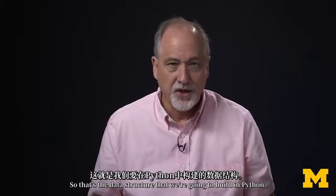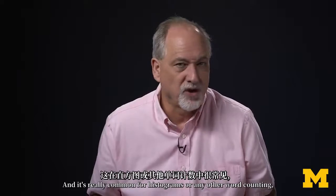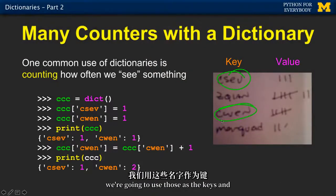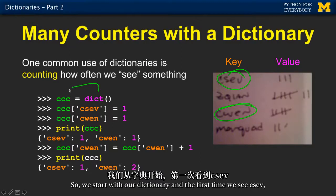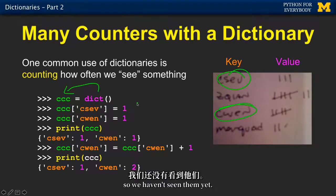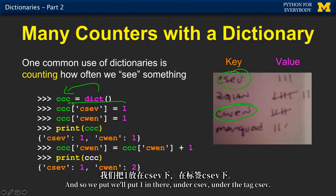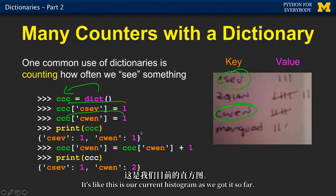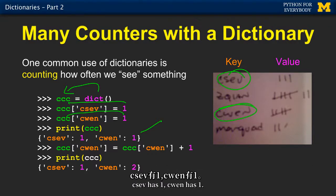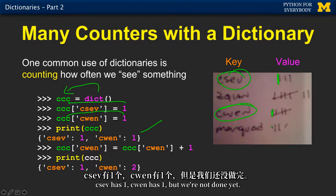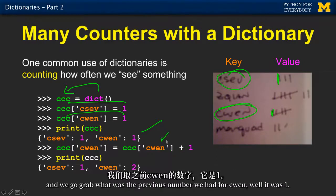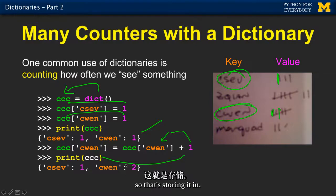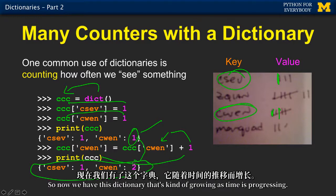That's the data structure we're going to build in Python — it's really common for histograms or any other word counting, or any kind of frequency. So we're going to take these names — Csev or Chenwen — and use those as the keys, using strings as keys in our dictionary. We start with our dictionary; the first one we see is Csev, so we haven't seen them yet, and we put one in there under Csev. We see Chen for the first time, so we put one in there for her, and then we print. This is our current histogram as we've got it so far — Csev has one, Chen has one. Now we see Chen again, and we go grab what the previous number was for Chen — it was one. Add one to that, and then stick it back in. So now we have this dictionary that's kind of growing as time is progressing.